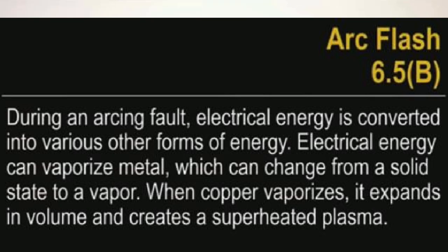Moving to the third point: arc flash. As per the National Electricity Code, taken from section 6.6.5b, during an arcing fault, electrical energy is converted into various other forms of energy. Electrical energy can vaporize matter — this is very important. When copper vaporizes, it expands in volume and creates a superheated plasma. We need to understand this.